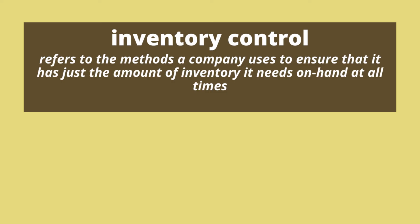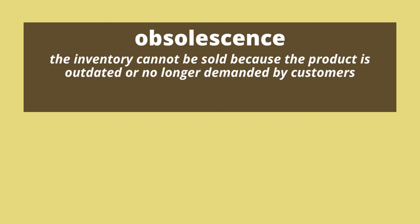If she tries to sell inferior products to her regular customers, they may choose to shop elsewhere. Let's review the lesson summary. Inventory control refers to the methods a company uses to ensure that it has just the right amount of inventory it needs at all times. This practice helps to minimize costs incurred from storing large amounts of inventory, as well as obsolescence, which occurs when a product is outdated or not wanted by customers.